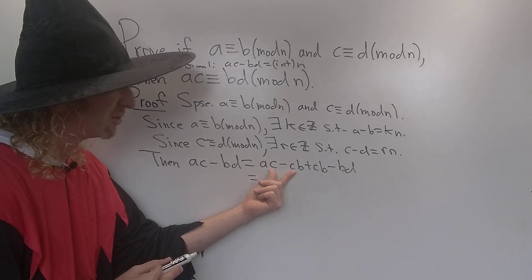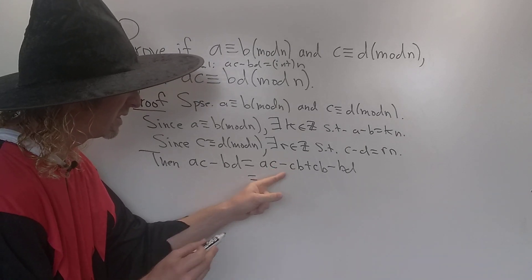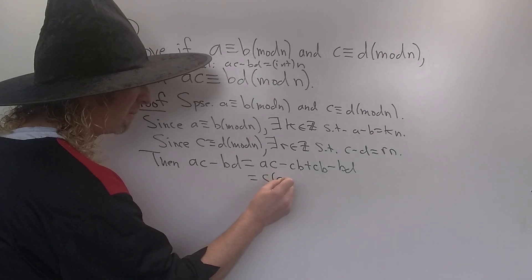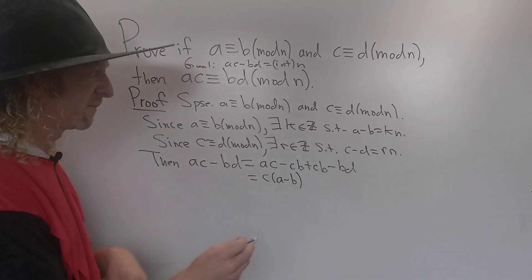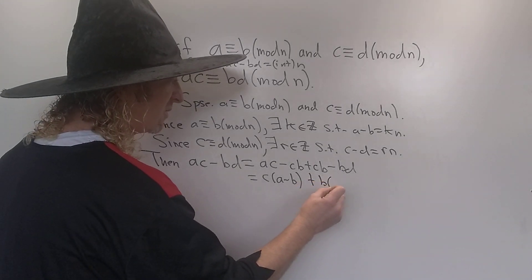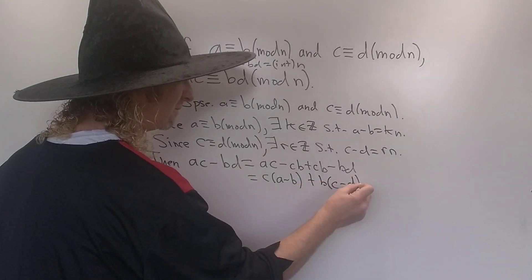Now you can pull out, look at this. You can pull out the C here. And so you get A minus B. Right? And then here you can pull out the B. And so you get C minus D. Beautiful, right?